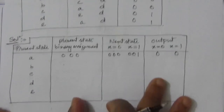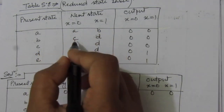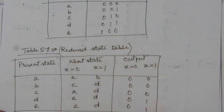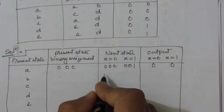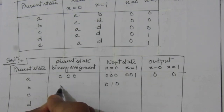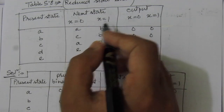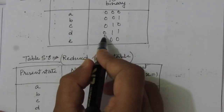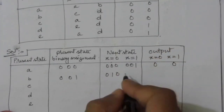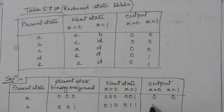Next, for present state B, the binary representation is 0, 0, 1. When input x equals 0, the next state is C, represented by 0, 1, 0. When x equals 1, the next state is small d, represented by 0, 1, 1. The respective outputs are 0 and 0.